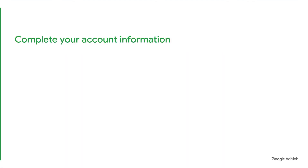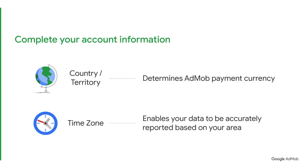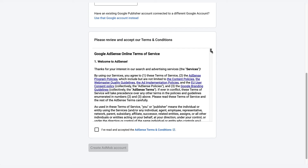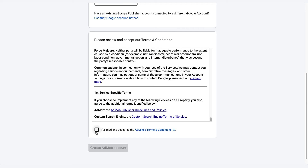Next, complete your account information by selecting your country or territory and timezone. Country or territory determines the currency that AdMob will pay you in. Timezone enables your data to be accurately reported based on your area. Once all fields are filled, please review the terms and conditions. Check the checkbox to proceed.